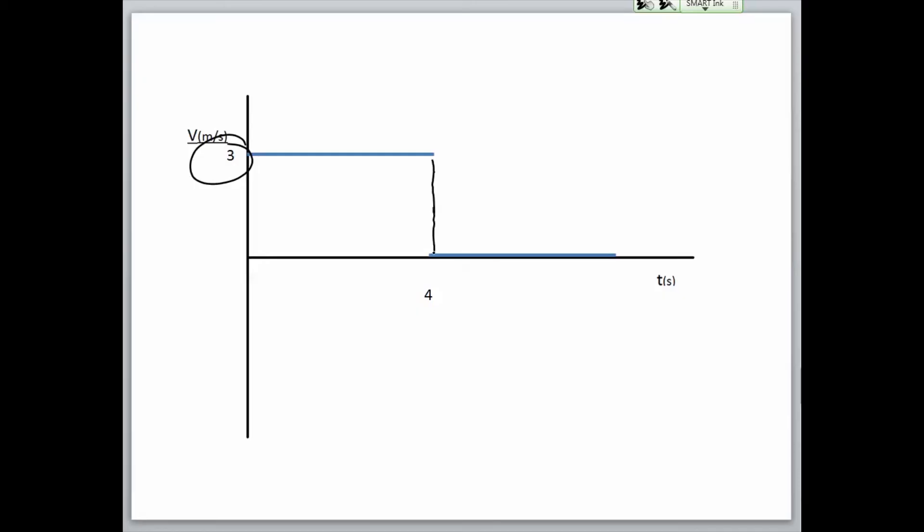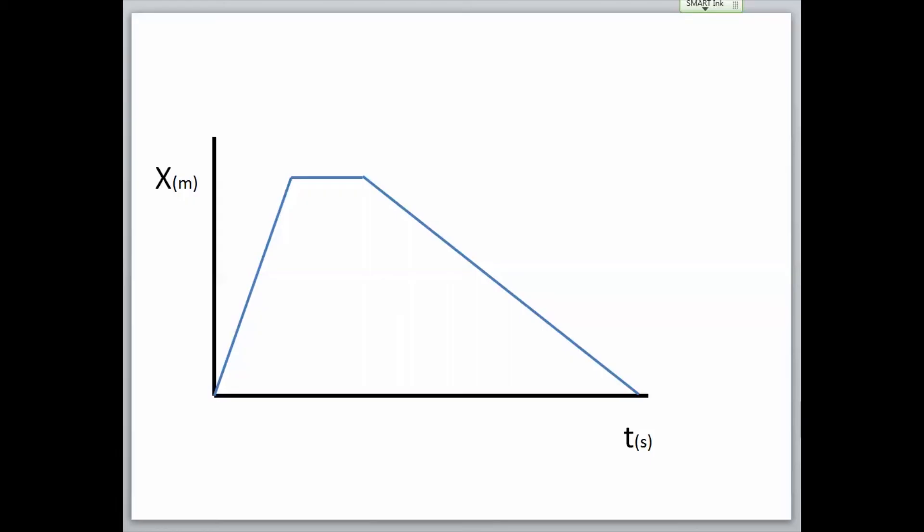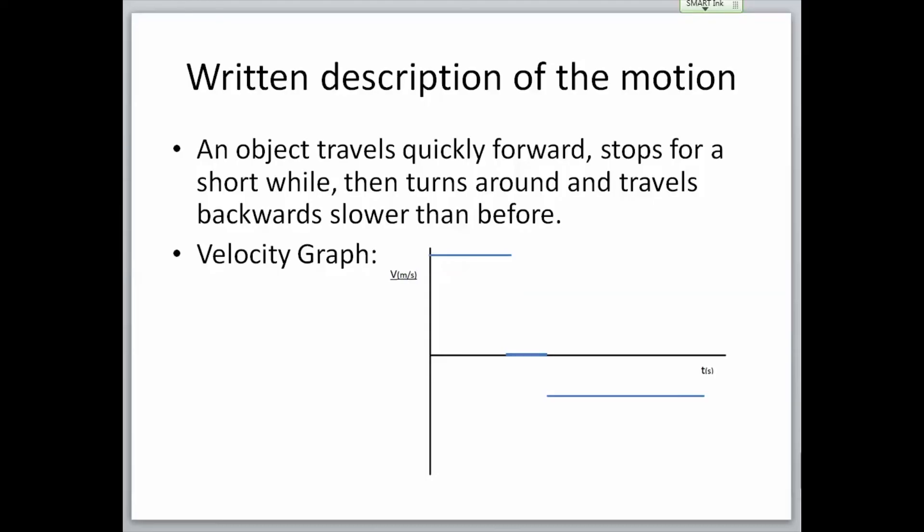Why don't you try describing the motion of this graph and draw the velocity graph that shows the same motion? I purposely left the graph without numbers, so you don't need to calculate the slopes. I just want to see if you get the idea of how to read the graph and switch from a position graph to a velocity graph. But notice qualitatively how the slopes are different. Pause the video to write down your answers, and I'll give you the answers in 5 seconds. And here's the answers. How'd you do?